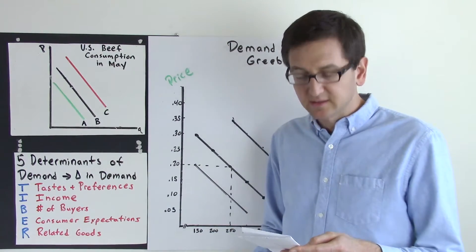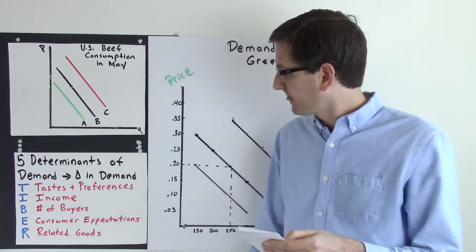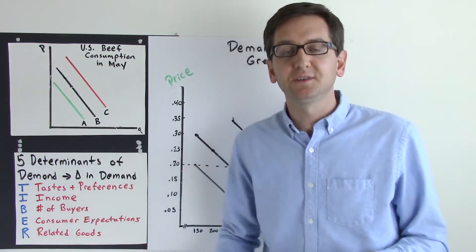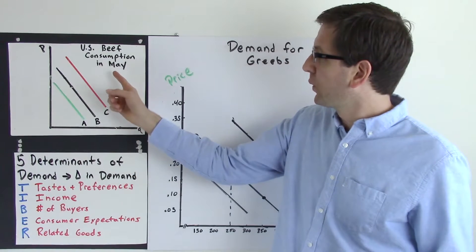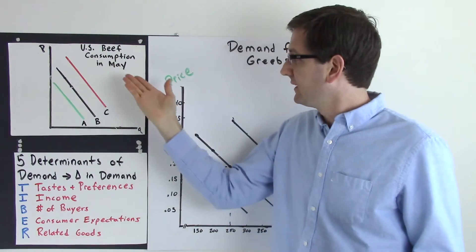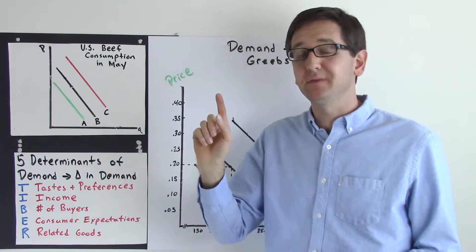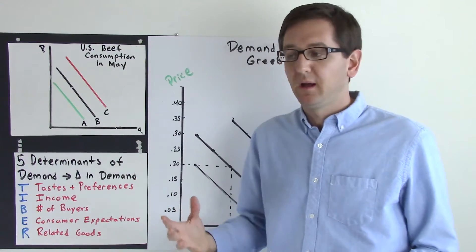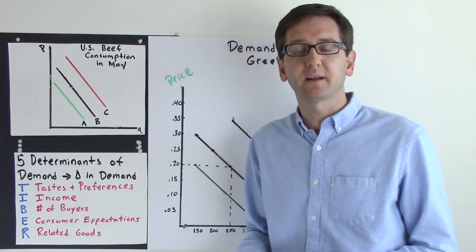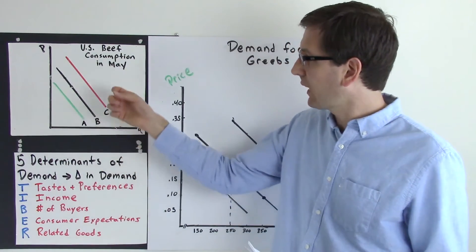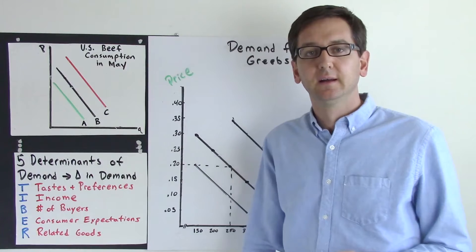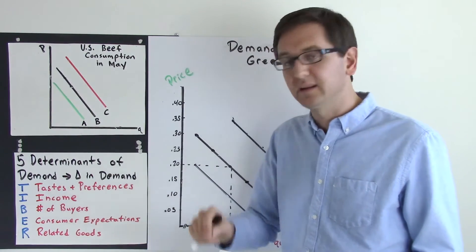Consumer expectations — this is a tricky and really interesting one. Let's say a headline said 'Price of beef will rise in June.' We're looking at US beef consumption in May. If I eat a lot of beef and see that headline saying prices next month will be very expensive, I'm going to purchase more beef now and probably put it in the freezer, because I don't want to purchase beef at a higher price next month. That will shift our demand curve from B to C, indicating an increase in demand because of consumer expectations.